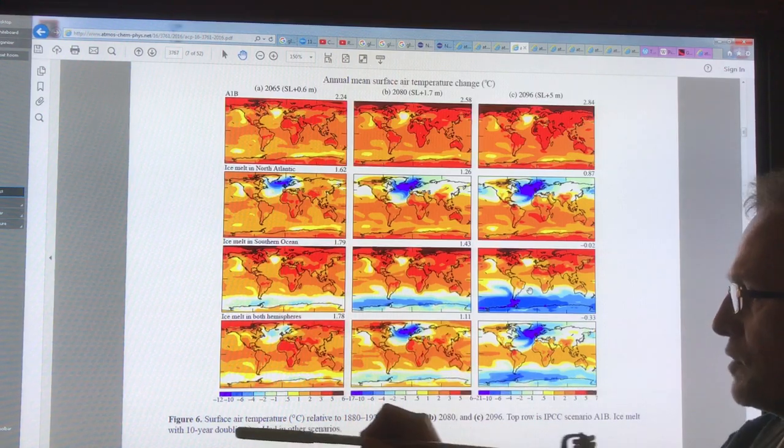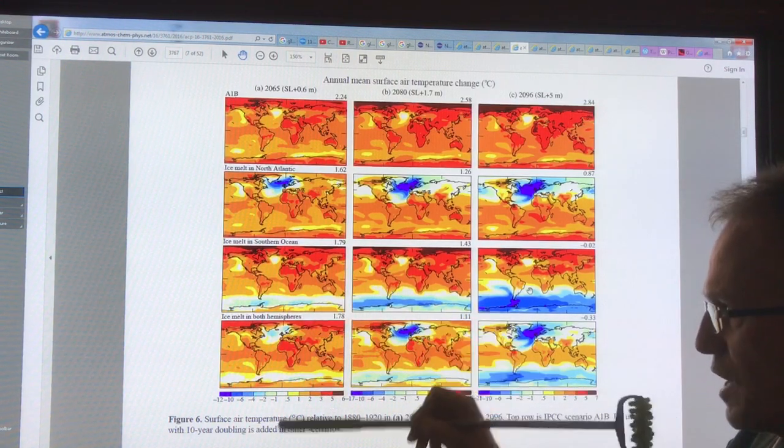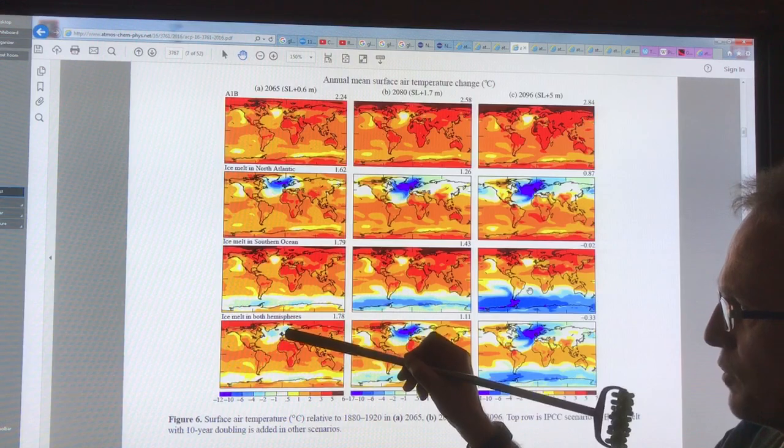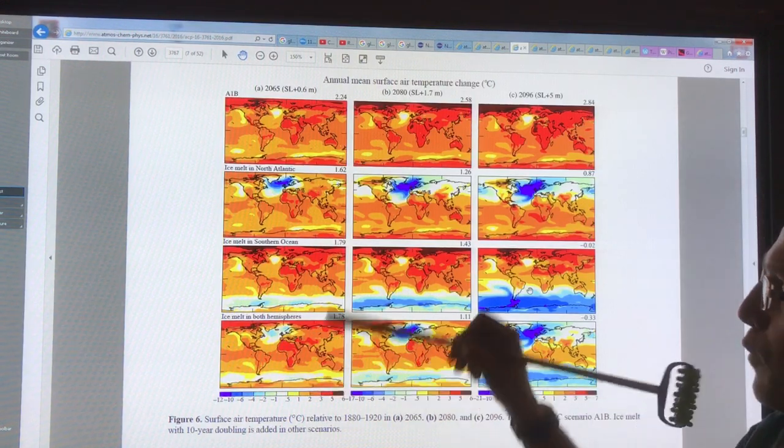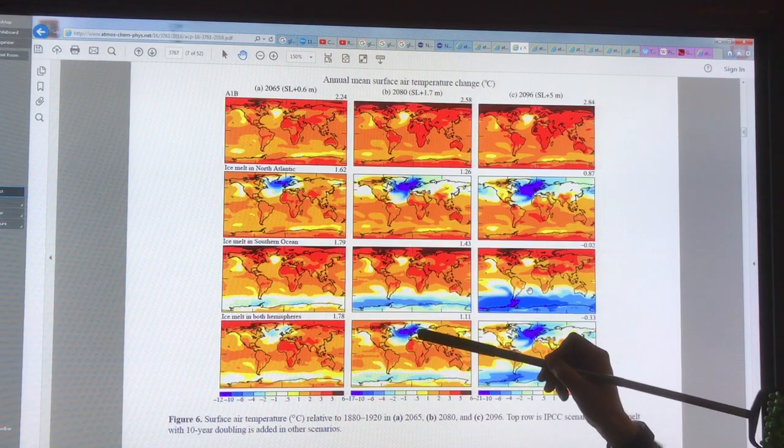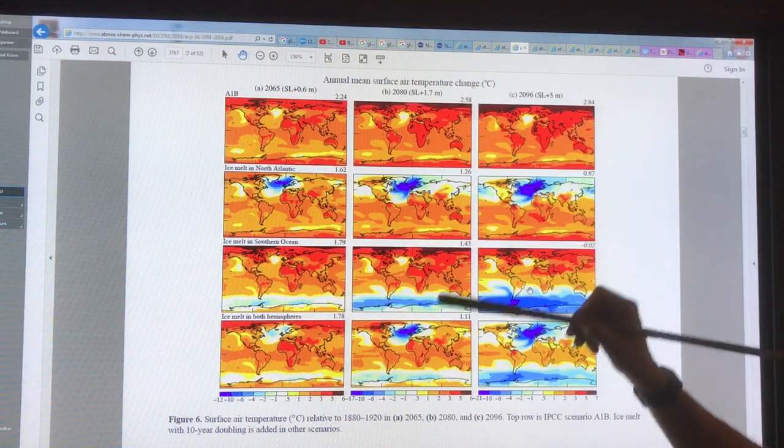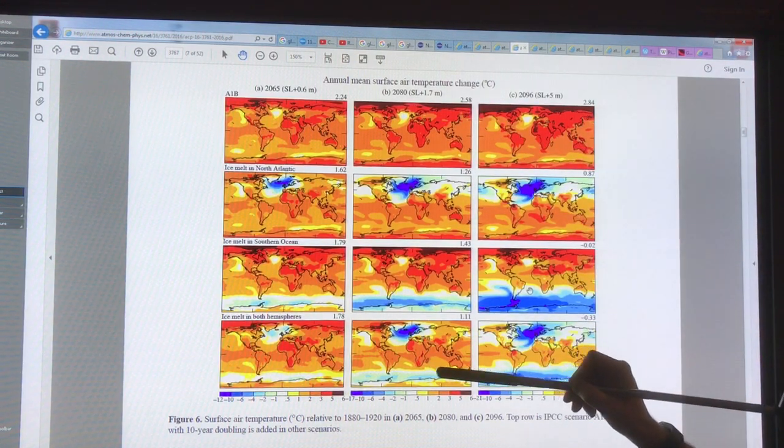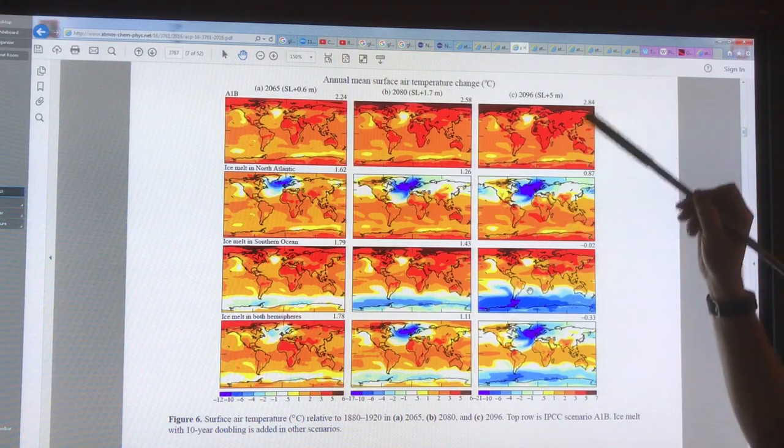This is what happens when we expect what would happen: we would get ice melt in both hemispheres. The doubling period of 10 years would occur in each hemisphere, so melting from Greenland and Antarctica would knock the temperature down a bit.